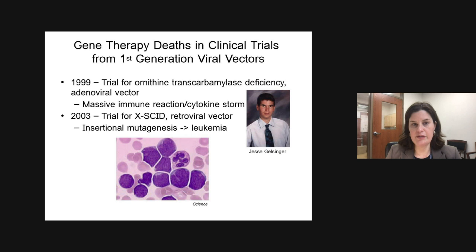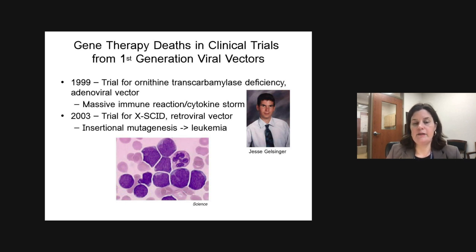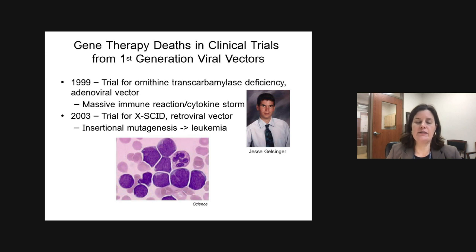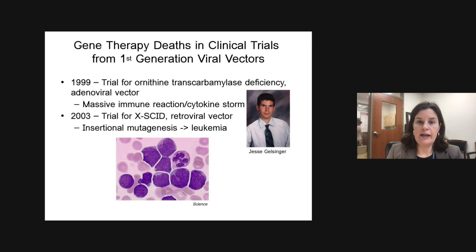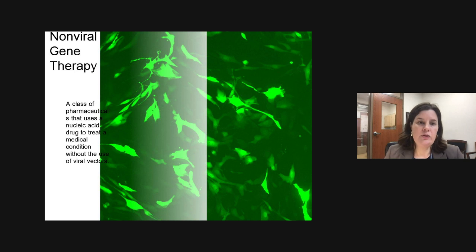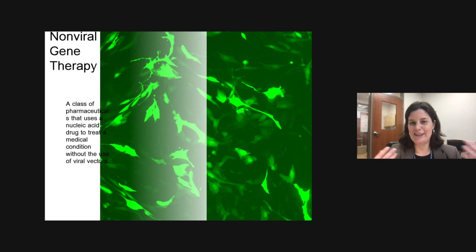A major setback in gene therapy was deaths that occurred in clinical trials from the first generation of viral vectors. In 1999, there was a trial for ornithine transcarbamylase deficiency where an adenoviral vector caused a severe reaction with a massive cytokine storm. In 2003, a trial for X-SCID involved a retroviral vector that inserted in front of the LMO2 oncogene and caused leukemia in patients. In the 2000s, there was recognition that we should explore options outside of viral vectors, motivated by safety concerns. Non-viral gene therapy uses the same definition but without viral vectors — it's a catch-all for all gene therapies that don't use viral vectors; they have DNA or RNA components but no capsid.